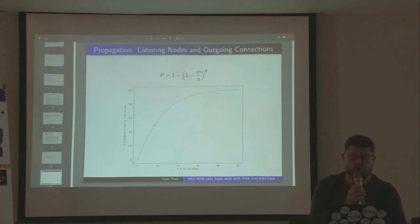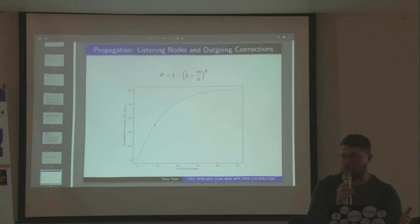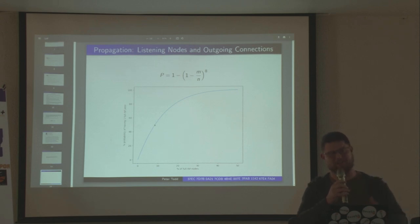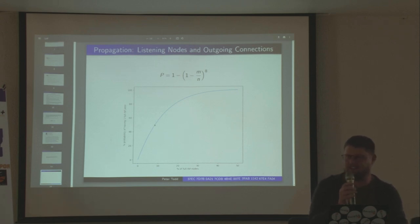Blockstream.info recently turned on mempool full RBF on the back-end nodes for their website. It doesn't always work, but a lot of the time it does. If you hit Ctrl+R, because the web interface actually connects to something like 10 different nodes, you can see what percentage are actually connected at one time, and I'm talking to them to go fix up the propagation issues.